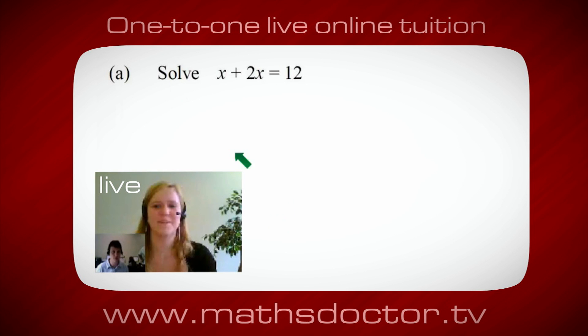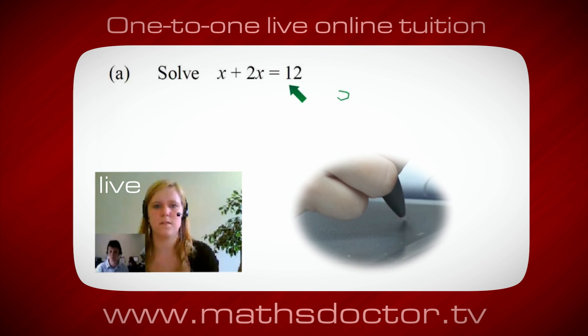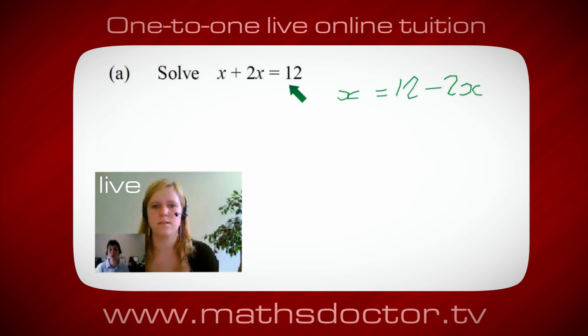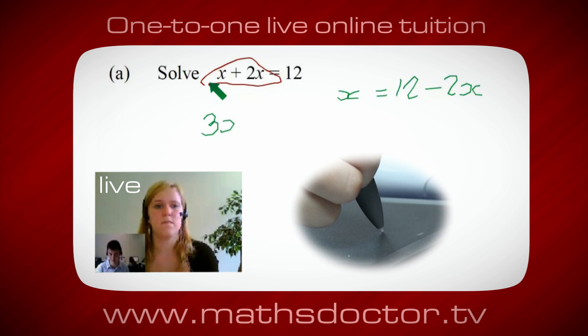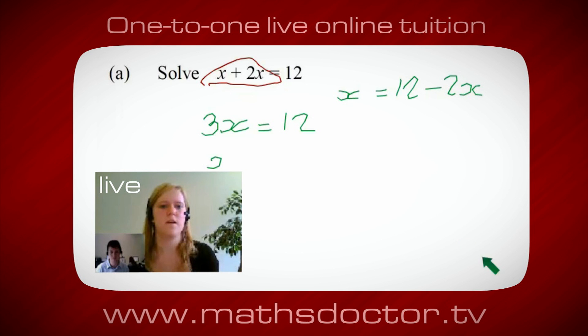OK Marie, so let's have a look at this one. Solve x plus 2x equals 12. So what do you think you do first? Well, I want x on its own, so I would put x equals 12 minus 2x. OK, so a lot of the time we want to get x by itself. But what we want to do first is get all of these x's together. So can you see anything we can do with this? Get all these together in one place. Oh, OK, it's 3x, isn't it? Yeah, absolutely. So 3x equals 12. Oh, and so x equals 4. Brilliant, spot on, well done.